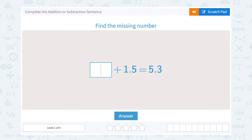Let's take a look at how to complete the addition or subtraction sentence. We want to find the missing number, some number plus 1.5 is equal to 5.3. Well, to figure out what that number is, we can work backwards.